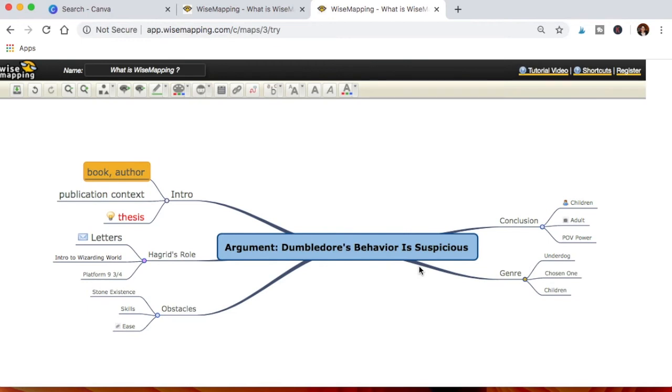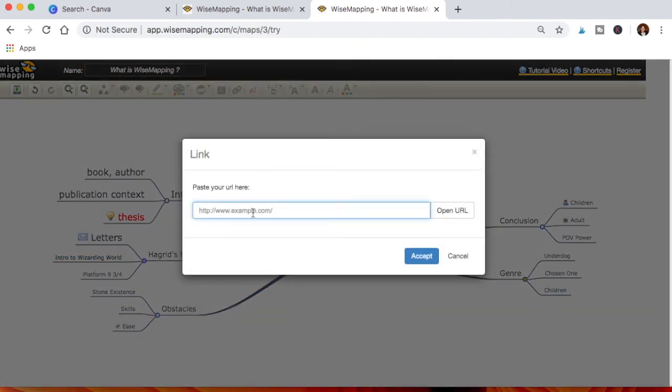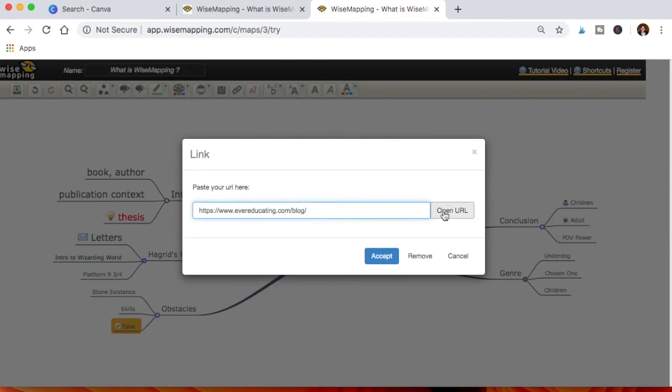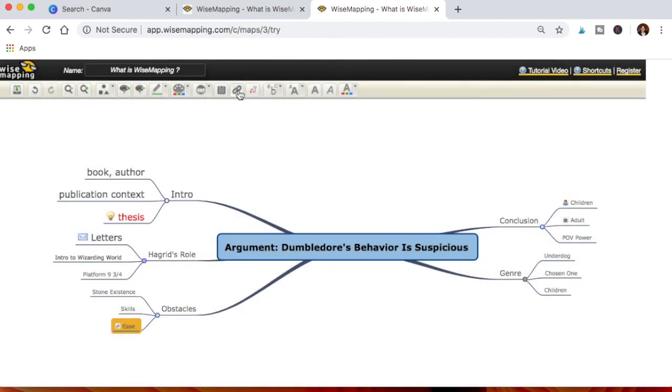Now let's say you have a link to a source that you want to make sure to remember for a certain part of your argument or the concept map that you're creating. You can just click add a link and type it out here and click accept. I have an example here, so if you click into it and open URL, it opens to that URL that you have. You can also remove it if you don't want to have the URL included.